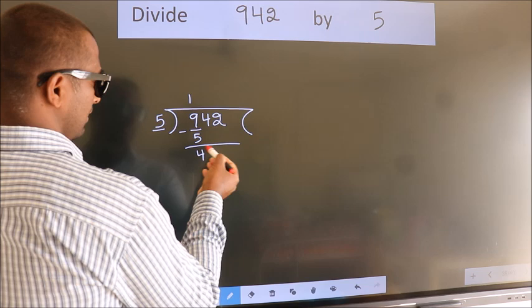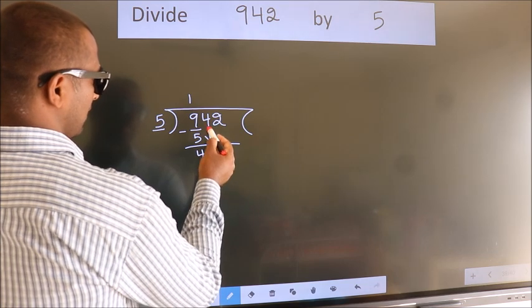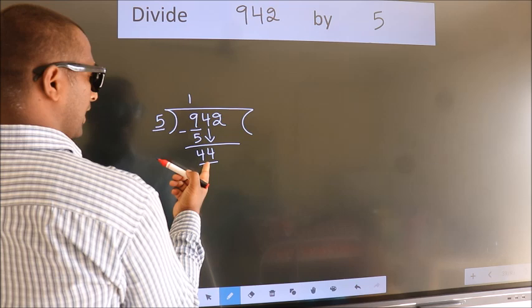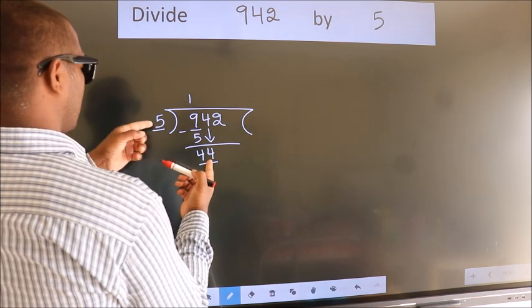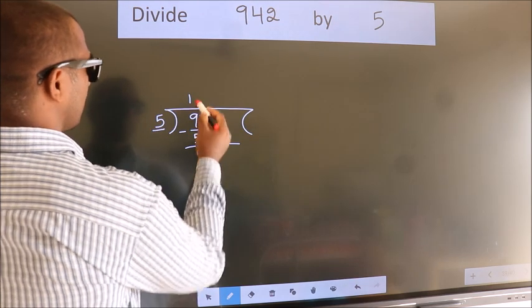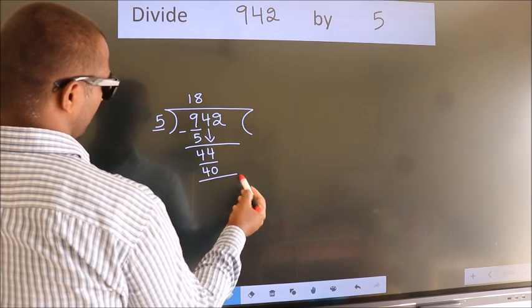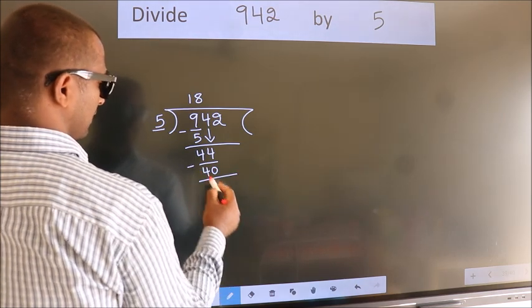After this, bring down the beside number. So, 4 down. So, 44. A number close to 44 in the 5 table is 5 eights 40. Now we subtract. We get 4.